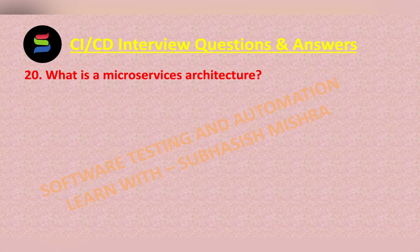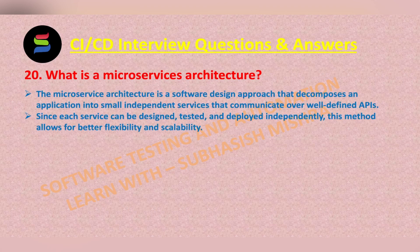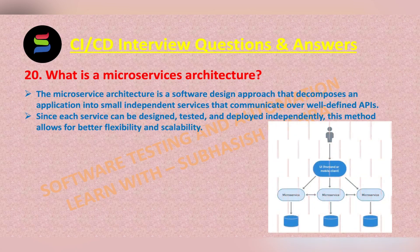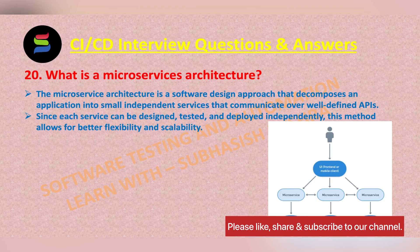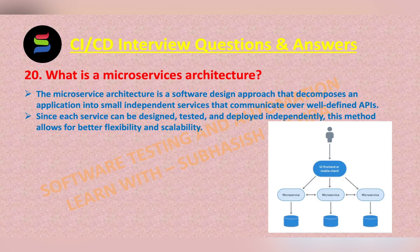What is a microservices architecture? The microservices architecture is a software design approach that decomposes an application into small independent services that communicate over well-defined APIs. Since each service can be designed, tested, and deployed independently, this method allows for better flexibility and scalability.